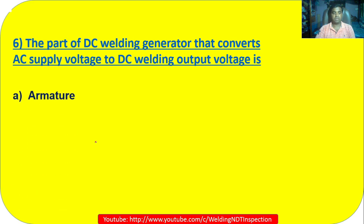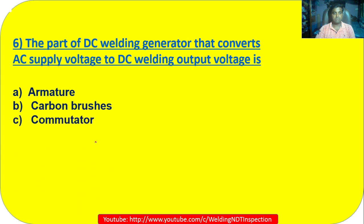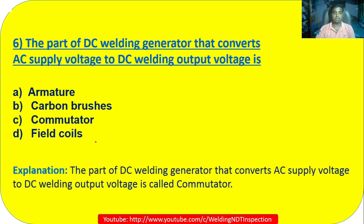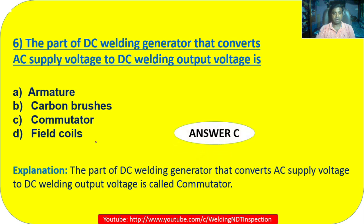Question 6: The part of a DC welding generator that converts AC supply voltage to DC welding output voltage is: A) armature; B) carbon brushes; C) commutator; D) field coils. The correct answer is the commutator. Option C is correct.